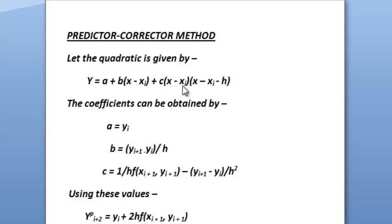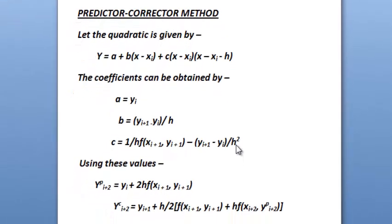Let the quadratic equation be given by Y equals a plus b into x minus xi plus c into x minus xi into x minus xi minus h. Now here the coefficients a, b and c can be obtained by the equations: a equals yi, b equals yi plus 1 minus yi divided by h, and c equals 1 by h into f of xi plus 1 comma yi plus 1 minus yi plus 1 minus yi divided by h square.